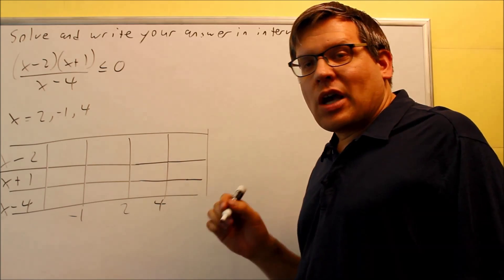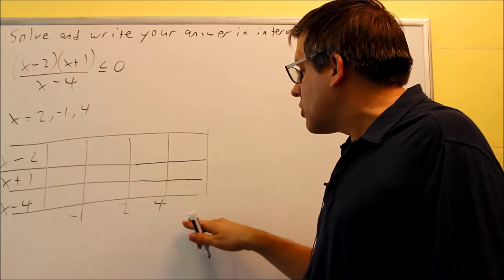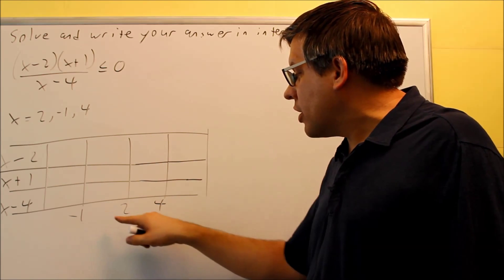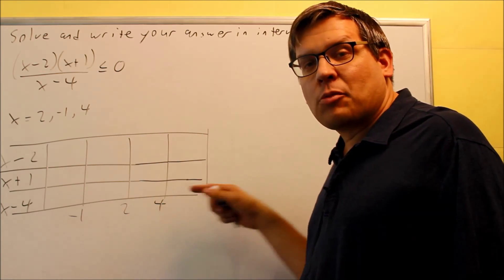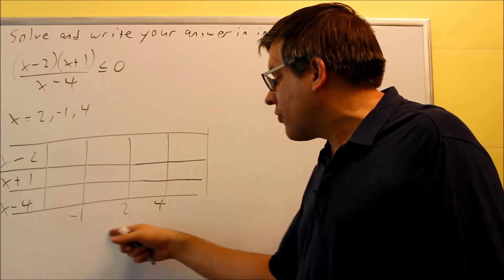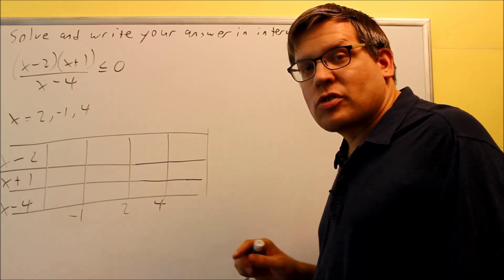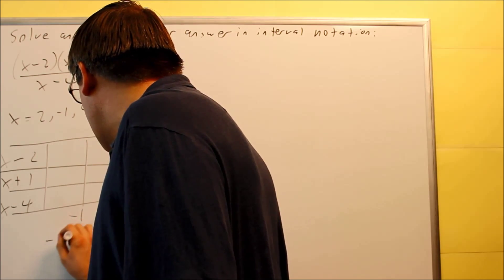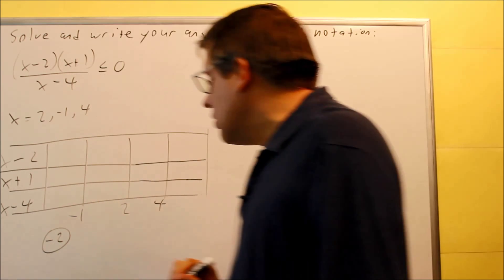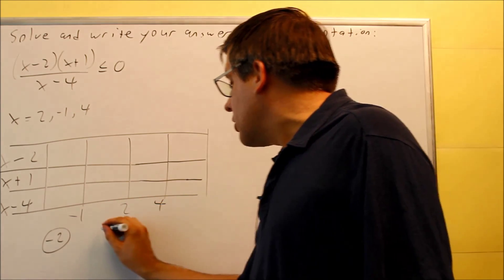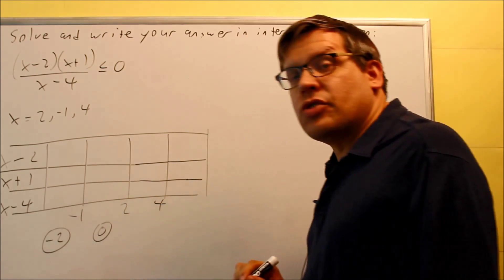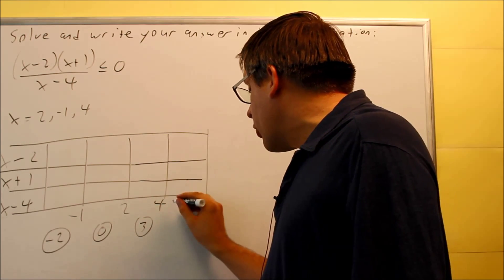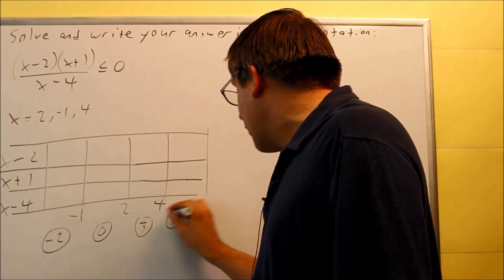Now I need to pick test numbers in between each of these regions: a number less than negative 1, a number between negative 1 and 2, a number between 2 and 4, and a number greater than 4. So I'll use four test numbers: negative 2, zero, 3, and 5.